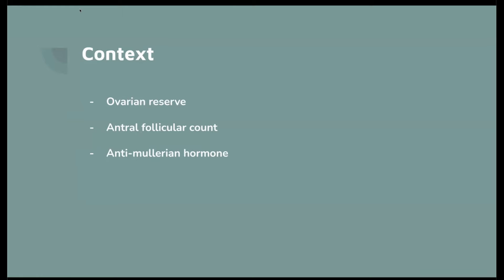Today we're going to be talking about follicle count, but you should know that anti-Müllerian hormone is also a really good indicator of ovarian reserve because it's a hormone that is secreted by the follicles themselves. Most people try to use both of those in conjunction with each other to get a more accurate reading of what's going on.